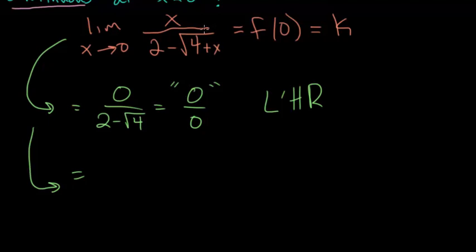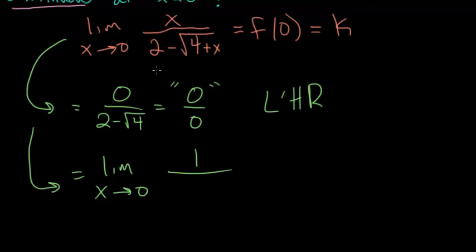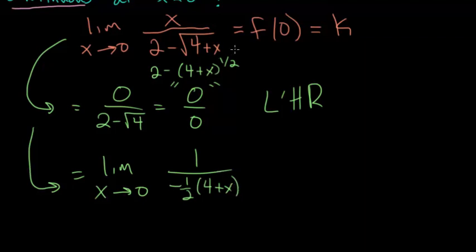Applying L'Hôpital's rule, we take the derivative of the numerator and divide by the derivative of the denominator. The derivative of x is just 1. For the denominator, rewrite it as 2 minus (4 plus x) to the 1/2 power. The derivative of the constant is 0, then applying the chain rule: bring the exponent down to get minus 1/2 times (4 plus x) to the negative 1/2, multiplied by the derivative of (4 plus x) which is 1.